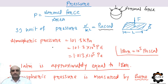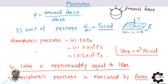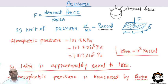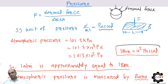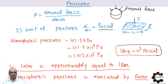Atmospheric pressure acts everywhere around us. Air molecules exert pressure in all directions. The value of atmospheric pressure is approximately 101.3 kPa, or 1.013 × 10⁵ Pascal. One bar is equivalent to 10⁵ Pascal, so one atmosphere is approximately equal to one bar. A barometer is used to measure atmospheric pressure.